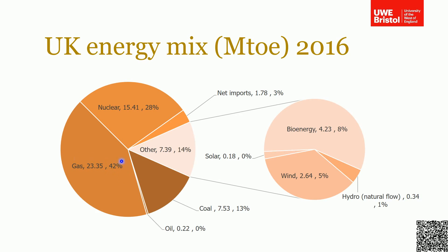You can see that the majority of the UK's energy supply comes from gas — over 40%, around 42%. A significant amount comes from nuclear fuel, which we'll discuss later. Coal is fairly significant but reducing, as the UK is starting to shut down coal power plants because of the emissions they produce, as discussed in the previous lecture.